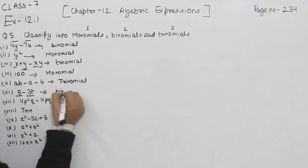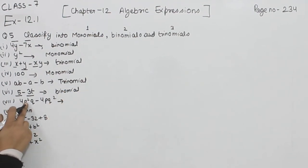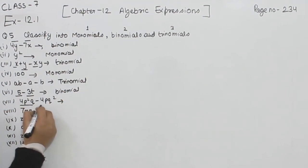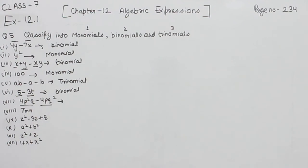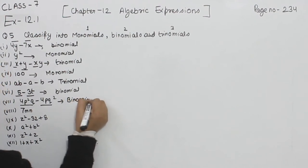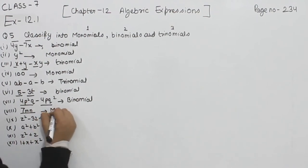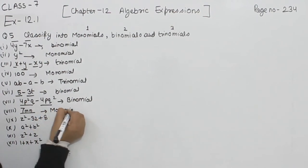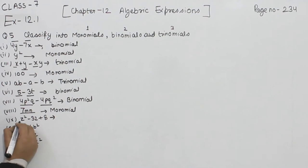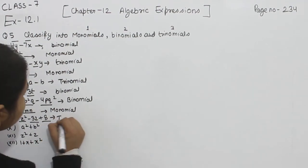So this one is binomial. Now 4p square q is the first term and 4pq square is the second term, so this is binomial having two terms. Now 7mn — only one term is here, so this is monomial. Now z square minus 3z plus 8 — this has three terms, so we are going to write here: